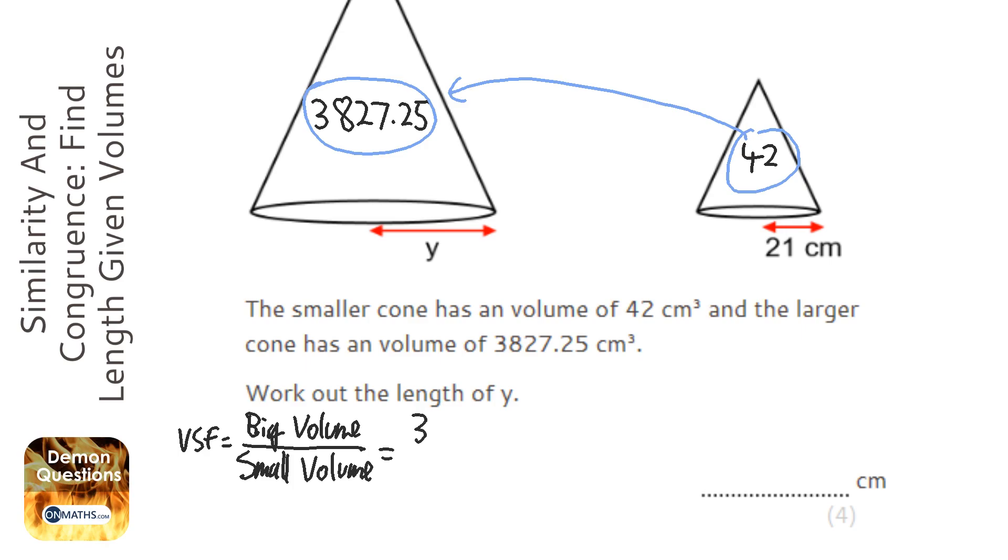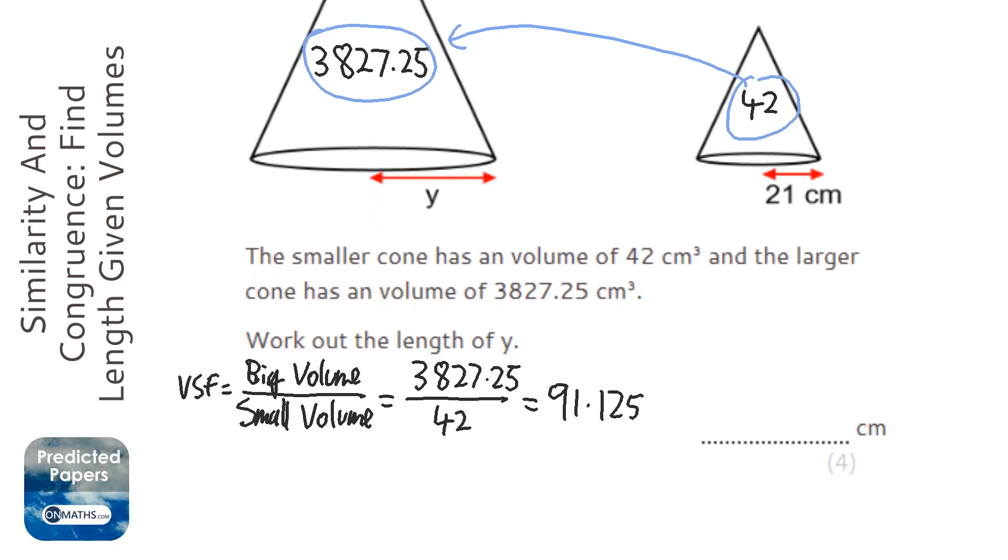So the big volume is 3827.25 and the small volume is 42. I'll get my calculator out and do 3827.25 over 42, divide by 42, and it's 91.125.